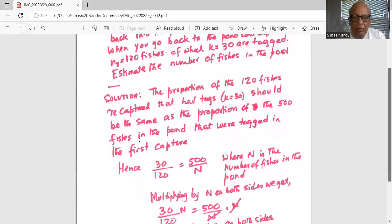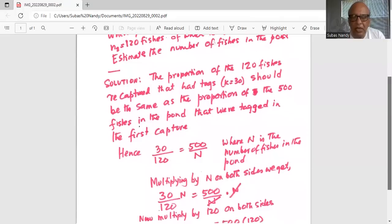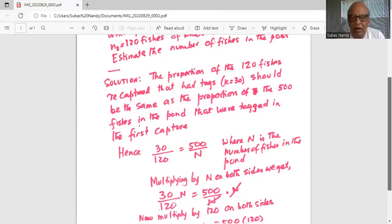Multiply by N on both sides. We get 30 divided by 120 multiplied by N equal to 500 divided by N multiplied by N. So the two N's in the numerator and in the denominator on the right hand side cancel out.